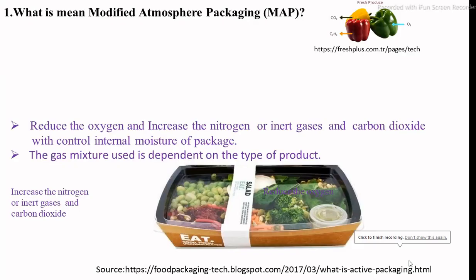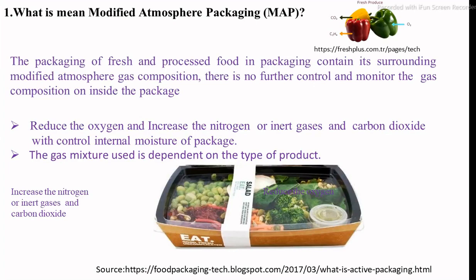What is meant by modified atmosphere packaging system? In fruits and vegetables, after harvesting their respiration is continued. During this, they are consuming oxygen and releasing carbon dioxide and ethylene gases. The rate of respiration is reduced by modification of the surrounding atmosphere. If the rate of respiration is reduced, obviously the shelf life of that packed product increases. This is the main basic principle.